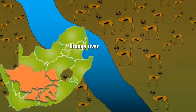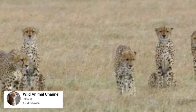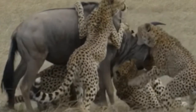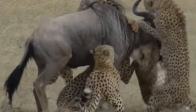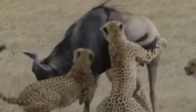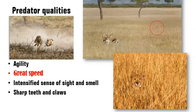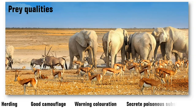Another area the Springbok is found in is the Namakaroo, the area of transition between the Cape Flora in the south and the savannah in the north. The subspecies Antidorcas marsupialis marsupialis is found in this semi-desert area. The most prevalent predator here is the cheetah. The cheetah is a pursuit predator often chasing their prey for more than 300 metres. Both stalking and chasing are important components of the cheetah's hunting strategy. The sprint speed of the Springbok is strongly related to their vulnerability to the cheetah. The cheetah has agility, great speed, intensified senses of sight and smell, sharp teeth and claws, and very good camouflage.